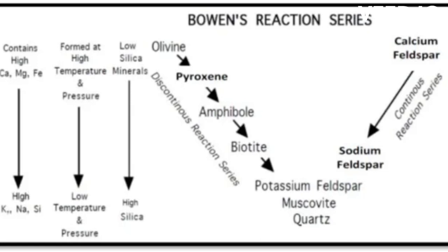The discontinuous branch describes the formation of mafic minerals such as olivine, pyroxene, amphibole, and biotite mica. This can be quickly remembered as 'old people are boring,' where 'old' represents olivine, 'people' represents pyroxene, 'are' represents amphibole, and 'boring' represents biotite.